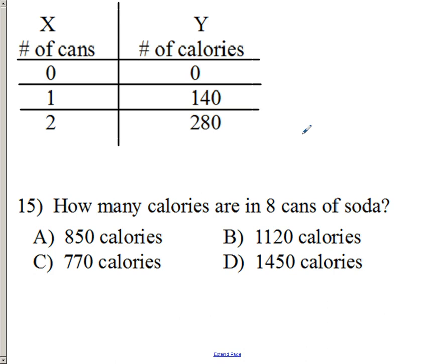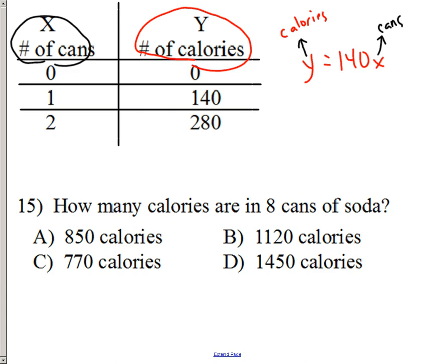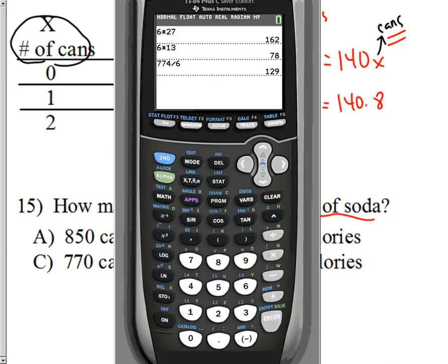How many calories are in a can of soda? Well, let's put the equation right here. And, let's find out what X stands for. X stands for the number of cans. So, right here is the number of cans. And, Y, we'll go back to the table. That would be calories. So, since they gave us 8 cans of soda, we're going to put it under here for X. Y equals 140 times 8. And, 1,120 calories.